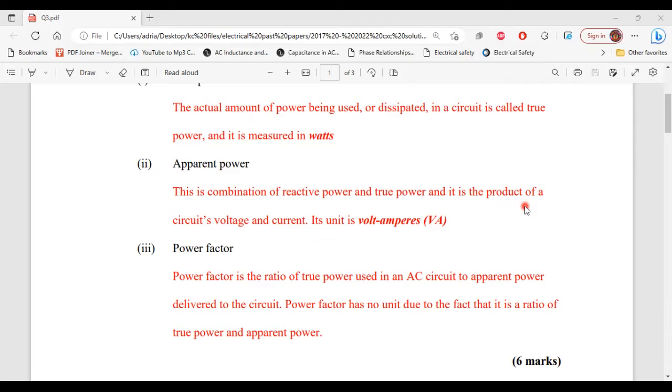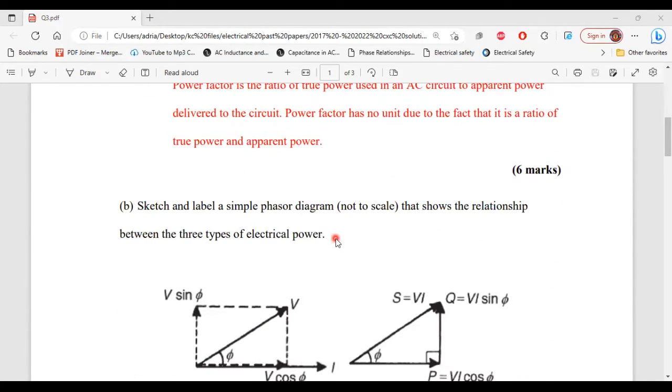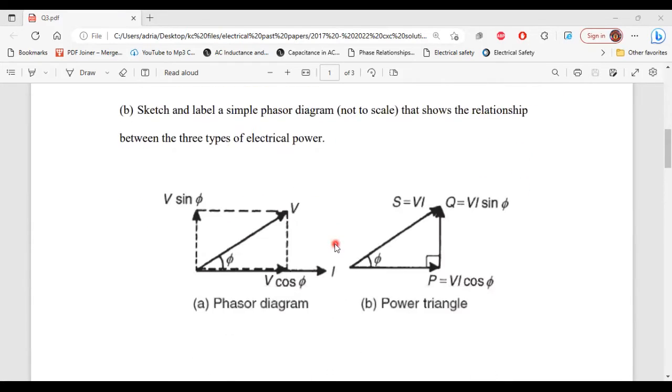All right, let's move on to part B. So it says sketch and label a simple phasor diagram not to scale that shows the relationship between the three types of electrical power. All right, so here we have two figures. Figure A, the phasor diagram. Figure B, the power triangle.